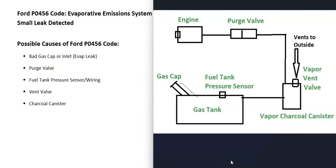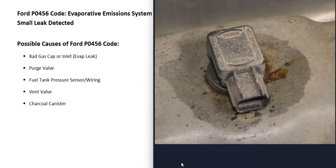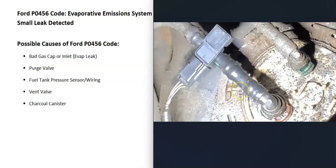Another thing that could cause this is a bad fuel tank pressure sensor. This sensor reports back to the computer what's going on inside the EVAP system, so if it goes bad, it might just be reporting bad information — meaning there may not actually be a problem, but the computer thinks there is. The location of the fuel tank pressure sensor can vary; sometimes it's on top of the gas tank, sometimes it's on the fuel pump. Also keep in mind that any wiring issues going to the sensor will also cause problems.